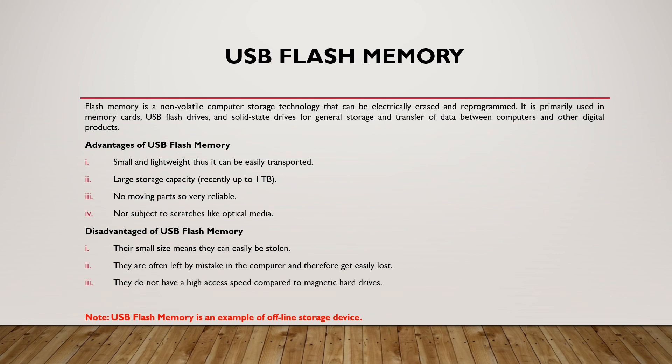USB flash memory is a non-volatile computer storage technology that can be electronically erased and reprogrammed. It is primarily used in memory cards, USB flash drives, and solid-state drives for general storage and transfer of data between computers and other digital products. Advantages include being small and lightweight, easy to transport, large storage capacity, no moving parts making it very reliable, and not subject to scratches like optical media. Disadvantages include the small size meaning they can be lost easily, they are often left in computers by mistake, and they don't have a high access speed compared to magnetic hard drives. Flash drives are an example of an offline storage device.